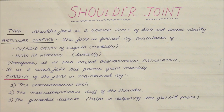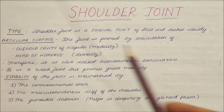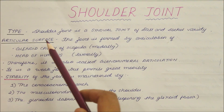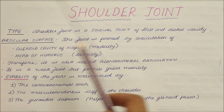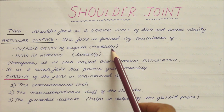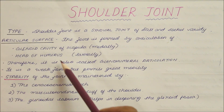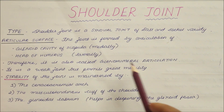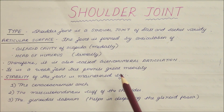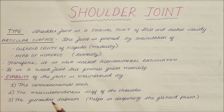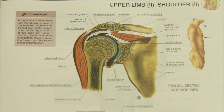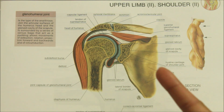To summarize the introduction: the shoulder joint is a synovial joint of the ball and socket variety, formed by the articulation of the scapula medially and the head of the humerus laterally — also called the glenohumeral articulation. It is a weak joint but permits great mobility. Stability is maintained by three structures: the coracoacromial arch, the musculotendinous cuff, and the glenoidal labrum, which helps in deepening the glenoid fossa. Now let's move on to the four main ligaments of the shoulder joint.